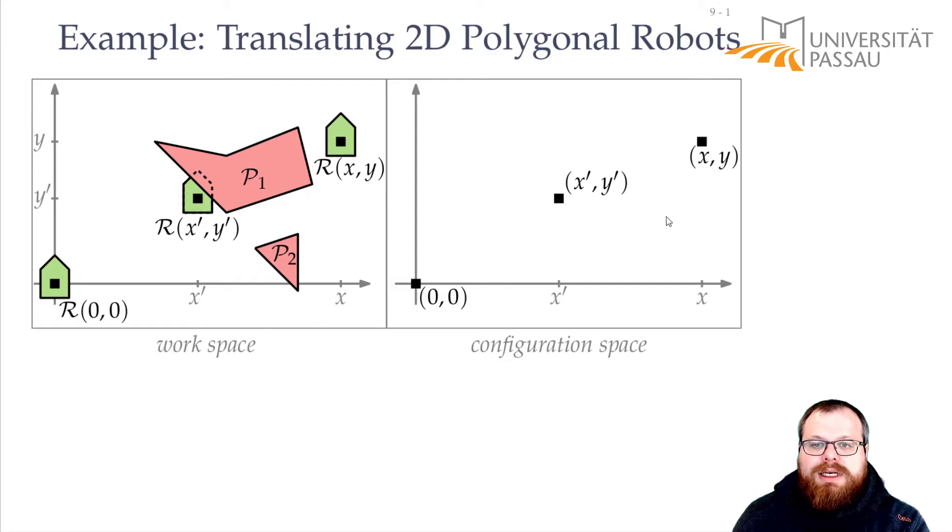For both these polygons, we have to create a larger polygon. And that will be our configuration polygon. The configuration polygon contains all the points in the plane such that if we place the robot there, then it will intersect our obstacle.